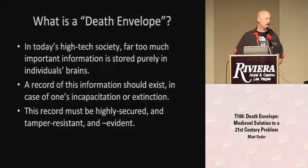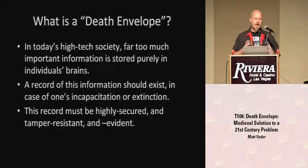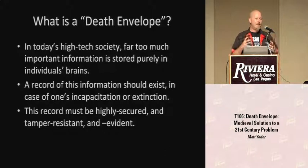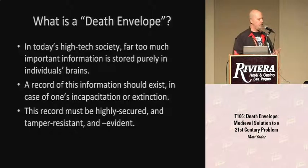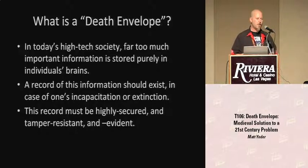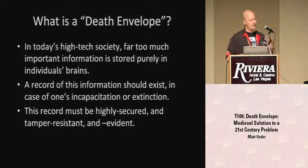So there's the first question: what is a death envelope? What it boils down to is, in today's high-tech world, there's a lot of information being carried around in people's heads that someone else is very likely to need if they die or become disabled. One of the things you want is that information stored in something that's fairly tamper-resistant and able to reveal if something's been tampered with. We're talking about high-security information, so you want to know if it's been accessed illegally.